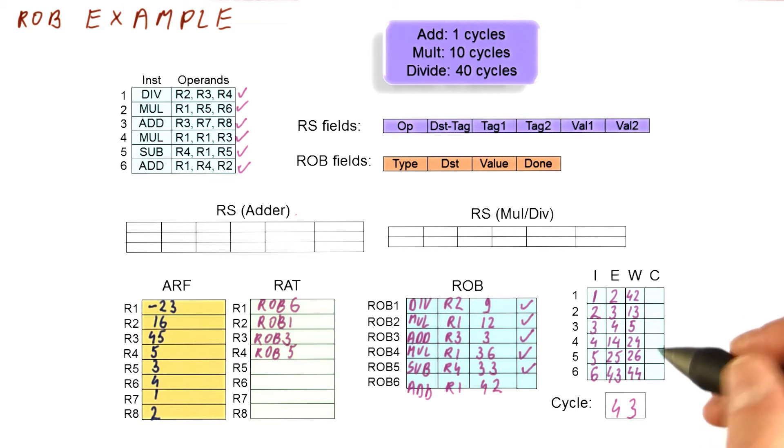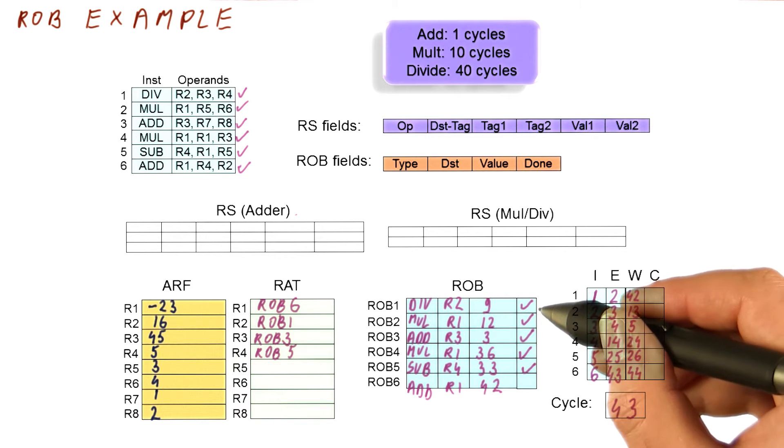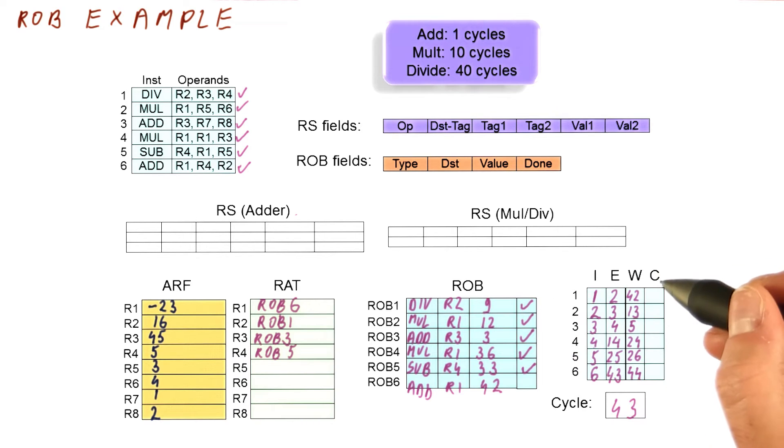There is another thing that happens in cycle 43, which is, all this time we have been waiting to commit this instruction because none of the other ones can commit until it commits. Finally, in cycle 42 we wrote the results, so in cycle 43 we can actually commit this instruction. It's been marked as done. So the commit logic is kind of staring at this entry and waiting to see a cycle where this entry has a check mark next to it. So finally we commit this in cycle 43.